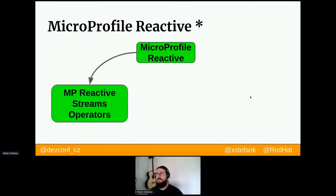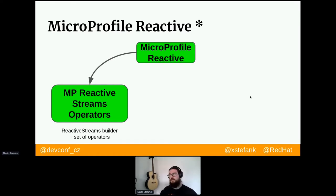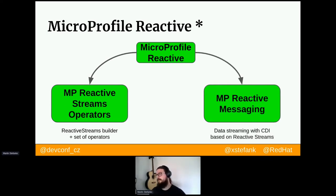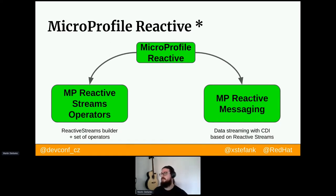MicroProfile reactive has two specifications. The first is Reactive Streams Operators, which contains a single ReactiveStreams class acting as a builder where you can call stream operations and plug in publishers, subscribers, and processors. The second is MicroProfile Reactive Messaging, which is data streaming with CDI — Context and Dependency Injection, the dependency injection implementation in Java.